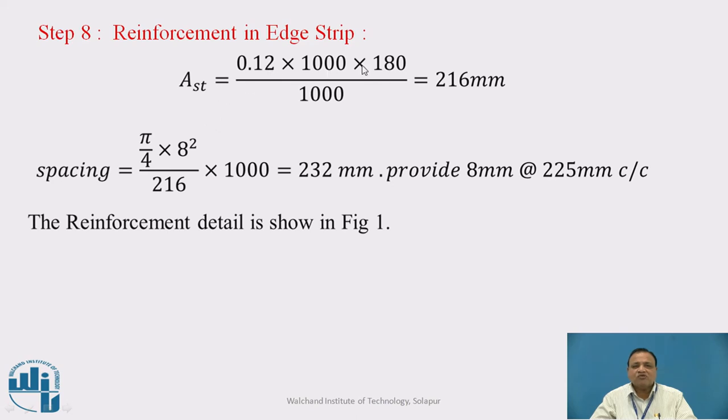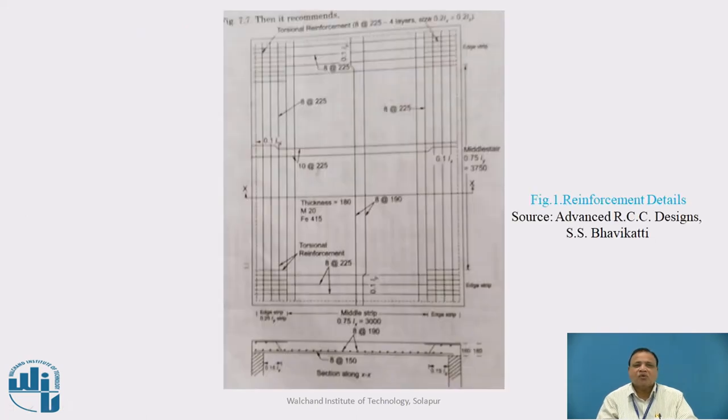Reinforcement at edge: minimum steel AST equals 0.12 times 1000 times D divided by 100 equals 216 mm^2. Spacing works out to be 232 mm. Therefore provide 8 mm diameter bars at 225 mm center to center. This is the reinforcement in the edge strip, as shown in figure 1.